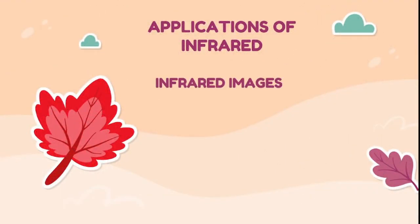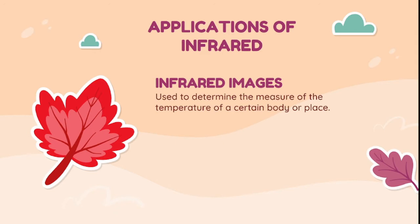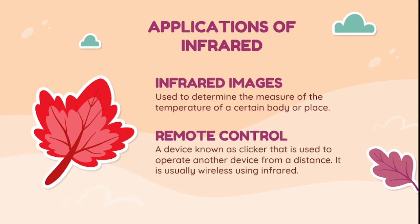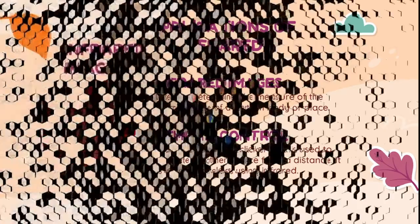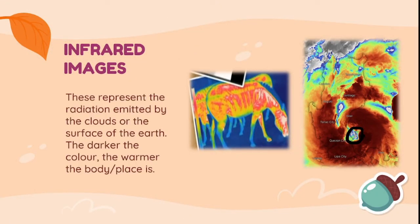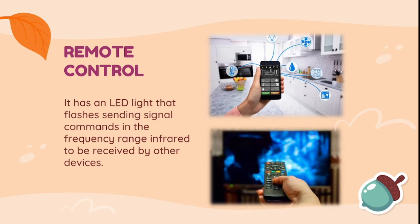The applications of infrared include infrared images, used to determine and measure the temperature of a certain body or place. Remote control is a device known as a clicker that is used to operate another device from a distance; it is usually wireless using infrared. These images represent the radiation emitted by the clouds or the surface of the Earth. The darker the color, the warmer the body or place is. A remote control has an LED light that flashes, sending signal commands in the infrared frequency range to be received by other devices.